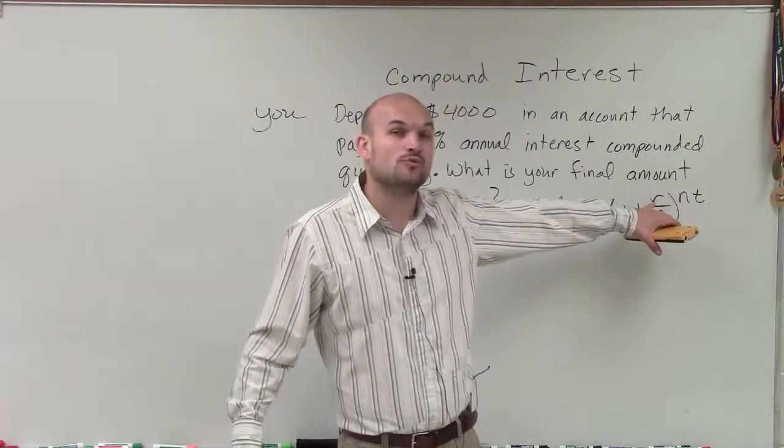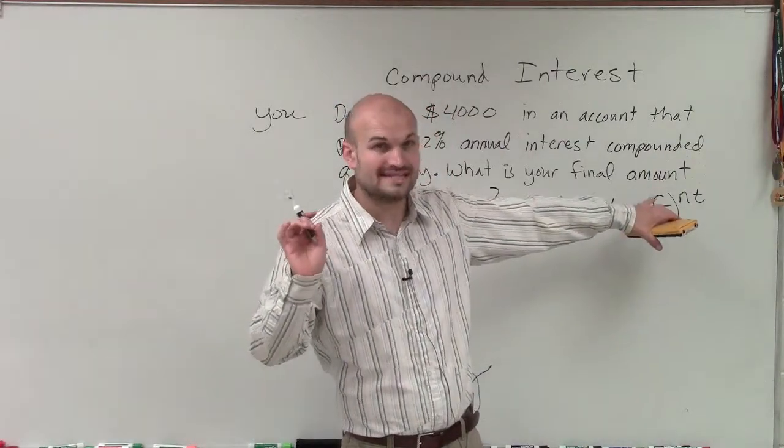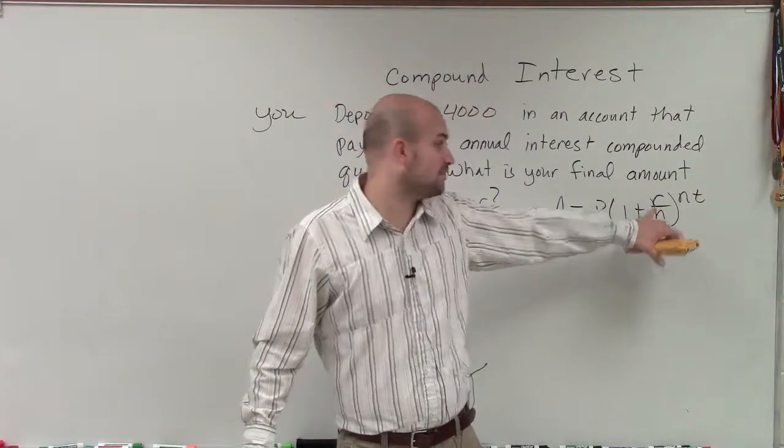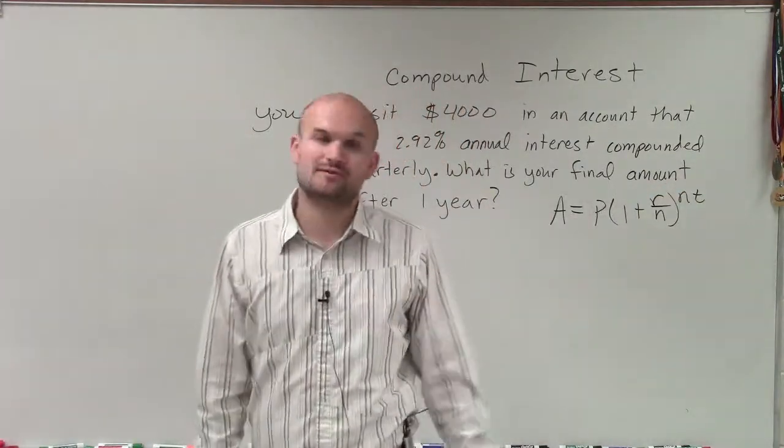R represents our annual rate in decimal. N represents the number of times we compound per year. T represents the number of years. Now we'll simply plug in our values.